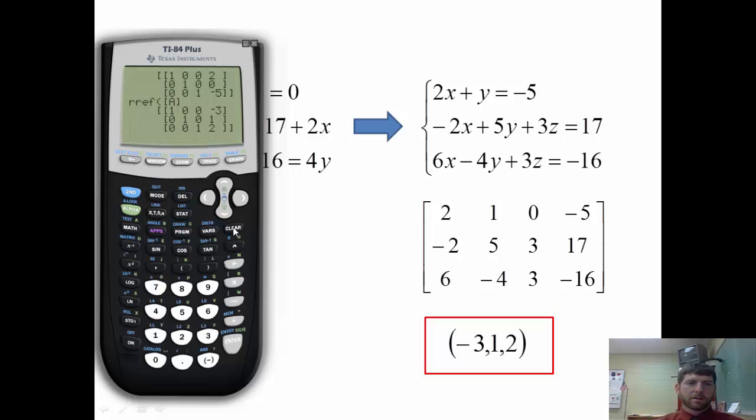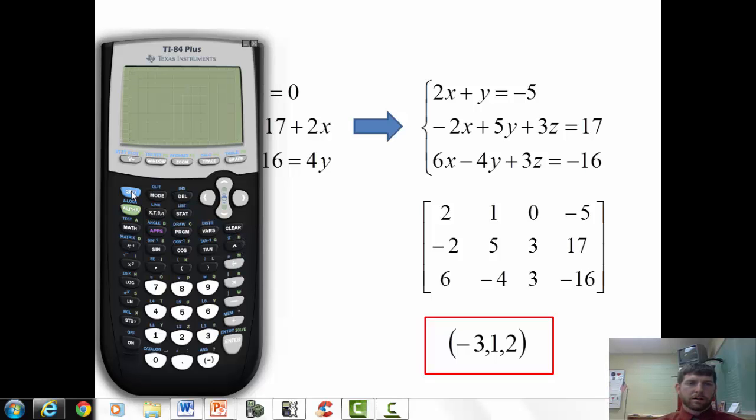So real quick, the steps. We second matrix edit. Number of rows by number of columns. Key in all our coefficients and our constants. Second quit. Second matrix math. Go to RREF. Hit enter. Second matrix A. Hit enter. Enter. And the last column is our answer.